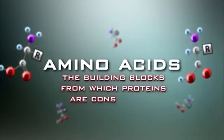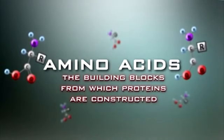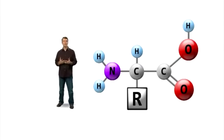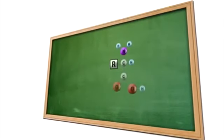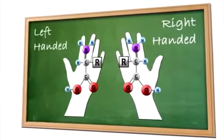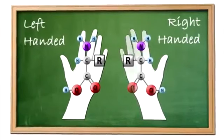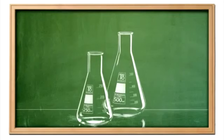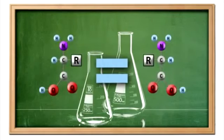Aminokyseliny - stavebné bloky, z ktorých sú postavené bielkoviny. Aminokyseliny sú najzákladnejšie stavebné bloky života. Každá aminokyselina je organická molekula, ktorá má karboxylovú kyselinu a aminoskupiny pripojené k rovnakému atómu uhlíka. Tu sú dve organické molekuly, ktoré majú rovnaké zloženie, ale sú zrkadlovým obrazom tej druhej. Poznáme ich ako pravotočivé a ľavotočivé aminokyseliny. Je prekvapujúce, že živé organizmy používajú a produkujú iba ľavotočivé aminokyseliny. Veci preto nemajú vysvetlenie. Keď sa aminokyseliny vyrábajú v laboratóriu, vytvorí sa rovnaký počet ľavotočivých a pravotočivých aminokyselín.